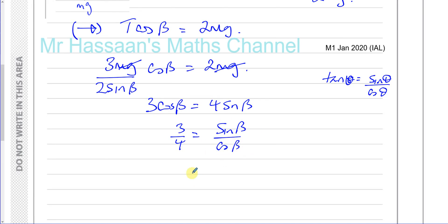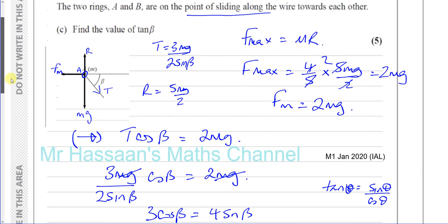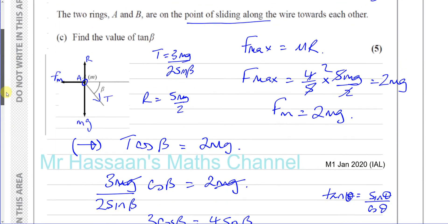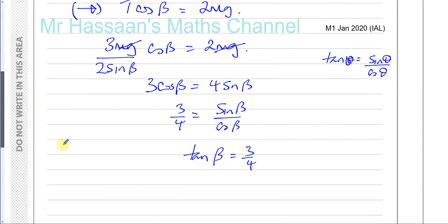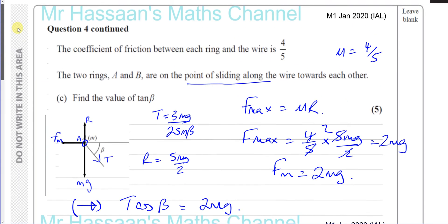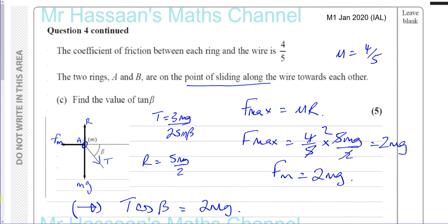The question asked for the value of tan beta, not the angle itself — so the answer is tan beta equals 3/4. This question is relatively new for Edexcel; I haven't seen a question about rings like this before, but it's not a big deal.